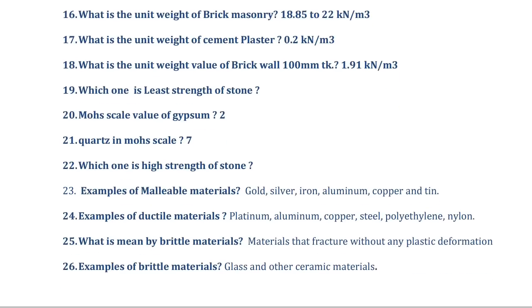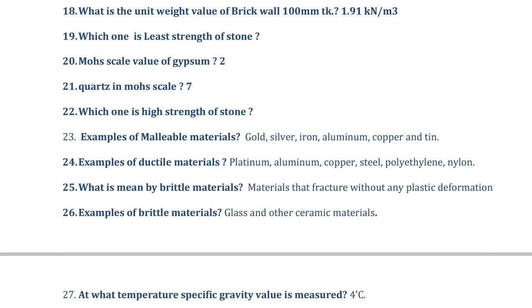Which stone has the least strength? The answer is talc. Its ordnance value on the Mohs scale is 1, and it has the least strength. What is the Mohs scale value of gypsum? That is 2. Please remember: the Mohs scale value of gypsum is 2.